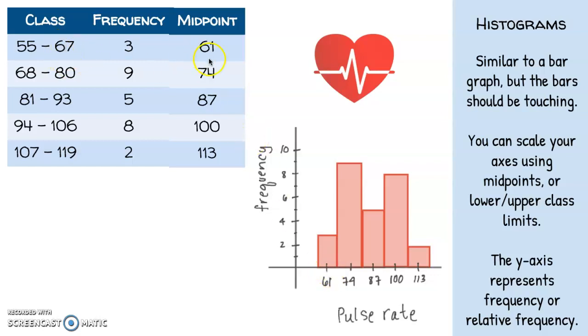So my first class has a midpoint of 61 and a frequency of 3, so my bar is centered around the number 61 with a height of 3. For my next class, my frequency is 9 and my midpoint is 74, so my bar is centered around the 74, and you can see the bar extends all the way up to 9.